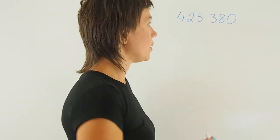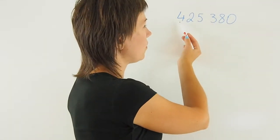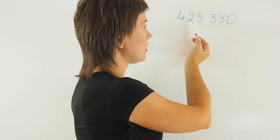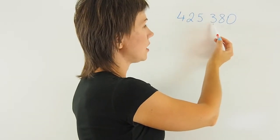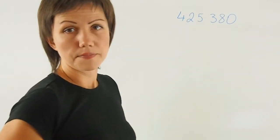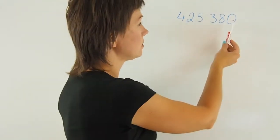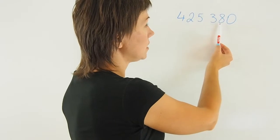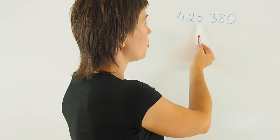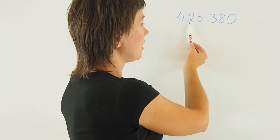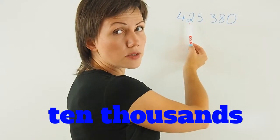In this case we have a number that has one hundred thousands, ten thousands, one thousands, hundreds, tens, and ones. So if we go in the correct order, this is ones, tens, hundreds, one thousands, and ten thousands.